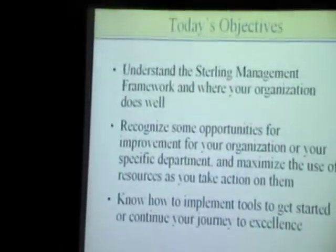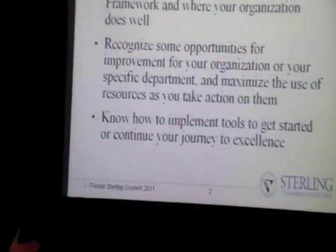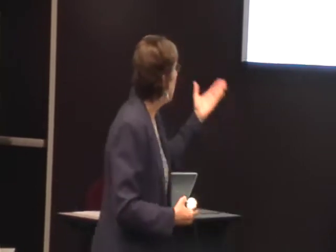The second objective is to recognize opportunities for improvement in your organization. As we go through the criteria and categories today, you'll see areas where you have strengths — where you do something very well and have results that show it. There might be other areas where you say we haven't even thought about that, or we do something but it doesn't really work. Those would be opportunities for improvement. This whole management model is about continuous improvement, decisions based on fact or data, and moving your organization toward accomplishing its mission.